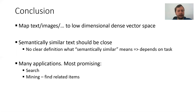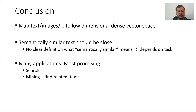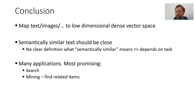So this is the first part of the lecture, giving some background and overview of the applications. In dense representation learning, we're interested in mapping text and images to low-dimensional dense vector spaces such that semantically similar text is close — however, there's no clear definition of what semantically similar means; it depends on the task. There are many applications, with search being the most promising, as well as mining for tasks like finding the most common questions about your product. In the next lecture, we will go more into how to train such systems.